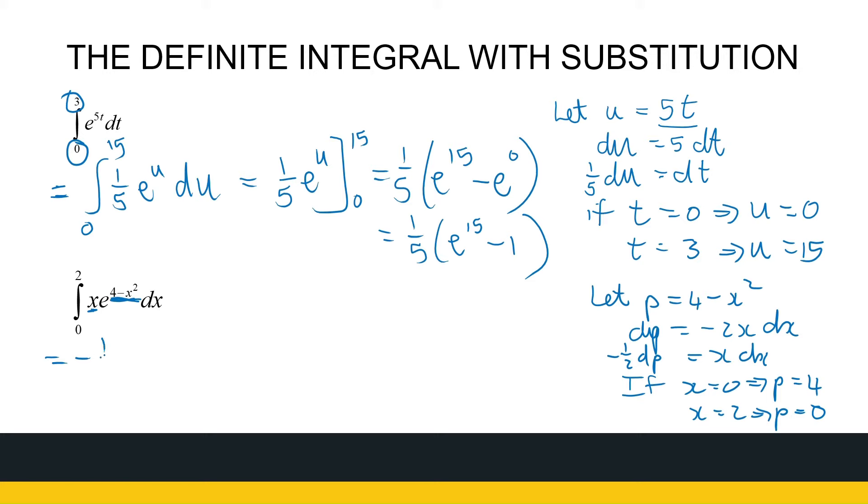I have minus a half the integral from 4 to 0 of e to the power p dp. Now take note, I'm going from 4 to 0. I can swap the limits of integration and multiply that minus with a minus, or I can just use it as it is. There's no problem with that.